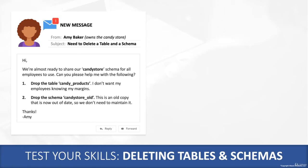She wants you to drop the candy_products table entirely. She knows what the margins are, but she doesn't actually want her employees knowing how much she's making on every sale. So she'd like you to go ahead and get rid of the candy_products table from the candy_store schema.